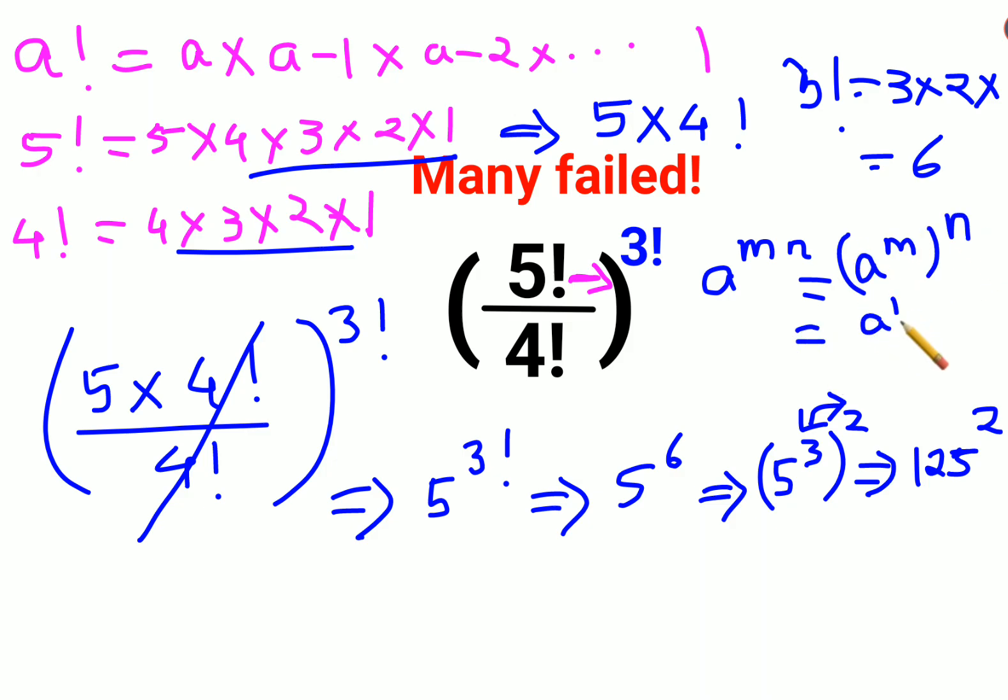Or I can write this as a raised to n the whole raised to m. So this could have been written as 5 square the whole cube which is 25 cube.